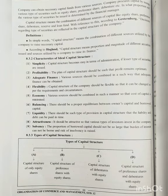The company obtains necessary capital funds from various resources. The company raises capital by issuing various types of securities such as equity shares, preference shares, debentures, etc. The proportion in which these various types of securities will be issued is determined by the financial manager.